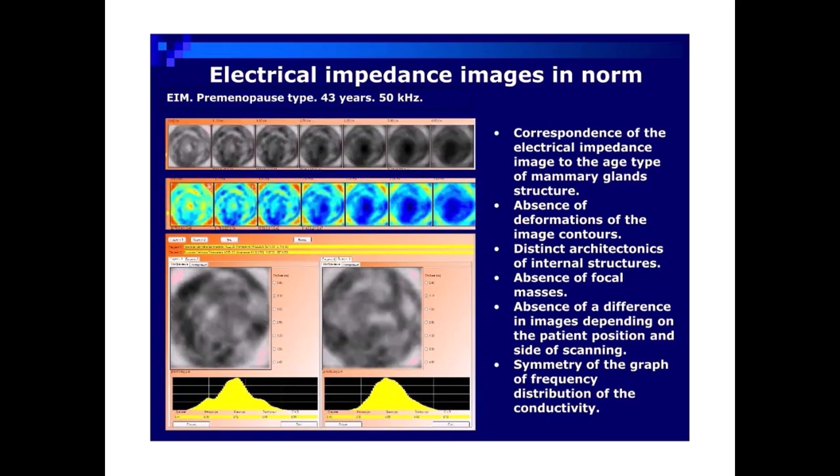EIM pre-menopause type, 43 years, 50 kHz. Correspondence of the electrical impedance image to the age type of mammary gland's structure. Absence of deformations of the image contours. Distinct architectonics of internal structures. Absence of focal masses. Absence of a difference in images depending on the patient position and side of scanning. Symmetry of the graph of frequency distribution of the conductivity.